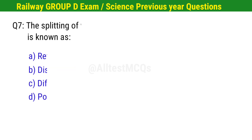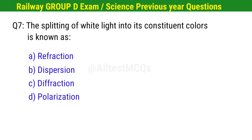Question No. 7. The splitting of white light into its constituent colors is known as? Right option is B. Dispersion.